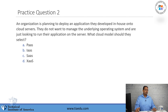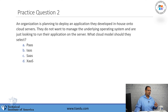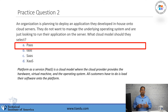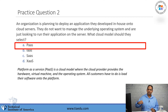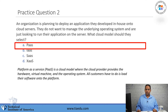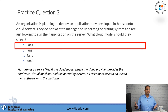Question number two: an organization is planning to deploy an application they developed in-house onto a cloud service. They do not want to manage the underlying operating system, and they're just looking to run their application on the server. What cloud model should they select? A, PaaS. B, IaaS. C, SaaS. D, XaaS. The answer is Platform-as-a-Service. PaaS is when the cloud provider gives you the operating system and the things needed to run your application. For example, on AWS, Elastic Beanstalk lets you set up a server that comes with Linux, MySQL, and PHP — you just put your web application on it and there's nothing to manage except your application.